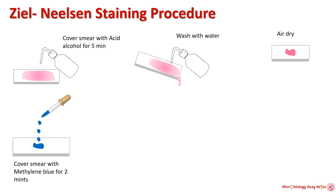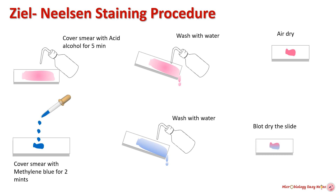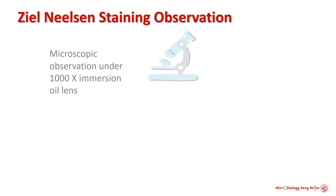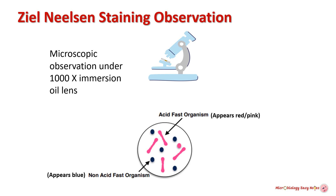Wash well with clean water and air dry the slide. Cover the smear with methylene blue stain for one to two minutes, then wash off the stain with clean water or distilled water, and blot dry the slide. Examine the smear under the microscope using the 1000x oil immersion objective. Acid fast bacteria appear red and non-acid fast bacteria appear blue.